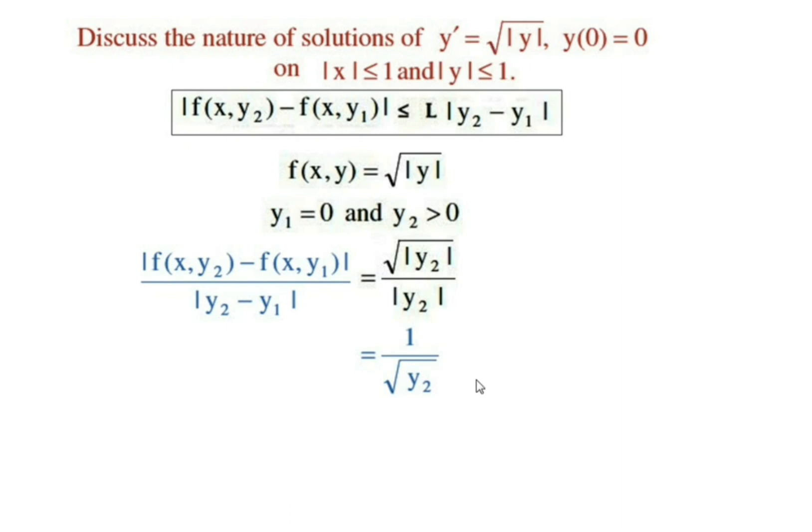One more time, I will give you the illustration. 1/√y₂ can be made as large as we wish by choosing small values of y₂. Therefore, there does not exist any positive real number L such that |f(x,y₂) - f(x,y₁)| ≤ L|y₂ - y₁|. This condition gives us that the Lipschitz condition is not satisfied.